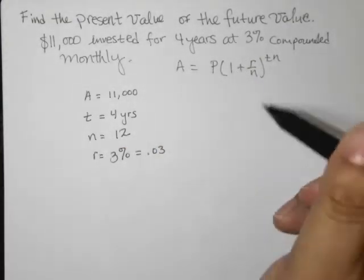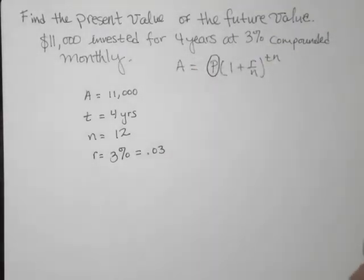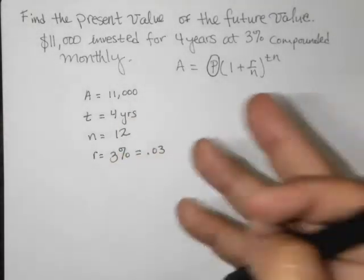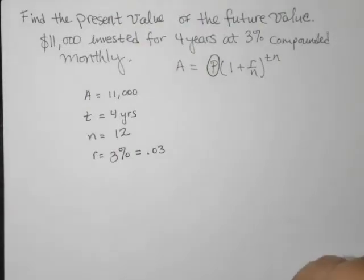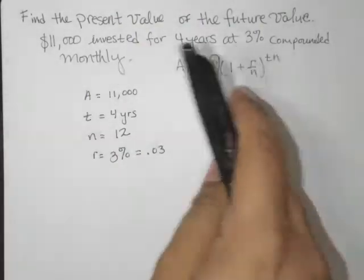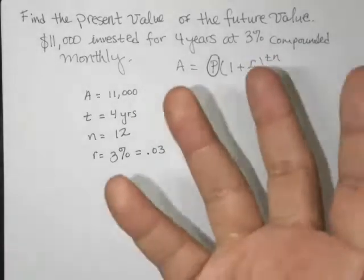Now, our goal here is to find this present value, P. So we are asking ourselves, if in four years we want $11,000 in our bank account, how much do we need to invest today given these conditions? So that's what we're looking at. How much do we need to deposit today?